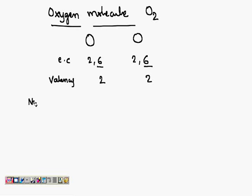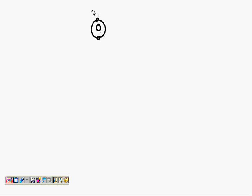Valency means the number of electrons shared in the outermost orbit. Now, if we look at an oxygen atom — the first orbit has 2 electrons and the second orbit has 6 electrons. 2 electrons will be shared from here.